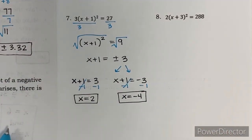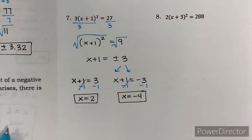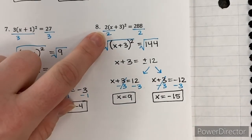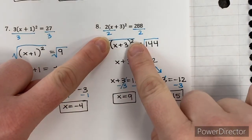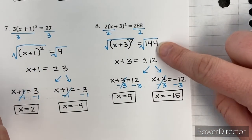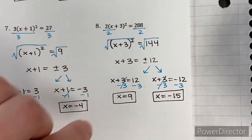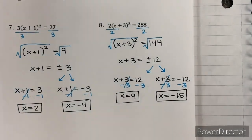Try number 8 on your own — it's very much like number 7. First divide by 2 to get rid of that 2 out front, giving x plus 3 squared equals 144. Take the square root: plus or minus 12. Split into x plus 3 equals 12 giving x equals 9, and x plus 3 equals negative 12 giving x equals negative 15. Great job today — there is a practice assignment to look out for, and I'll see you next time.